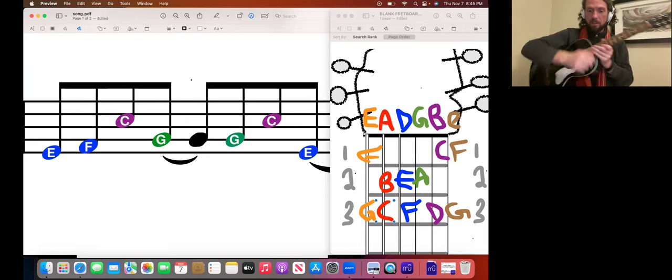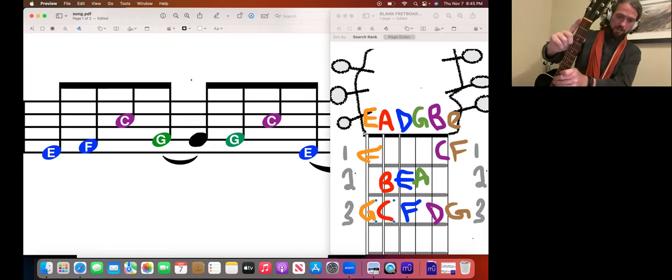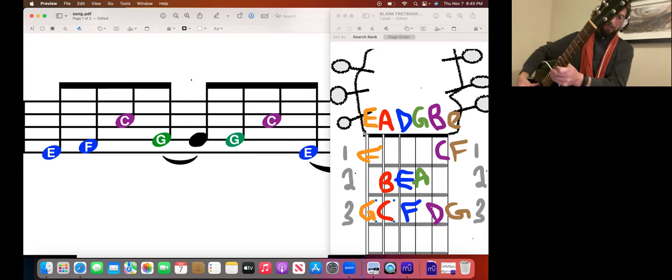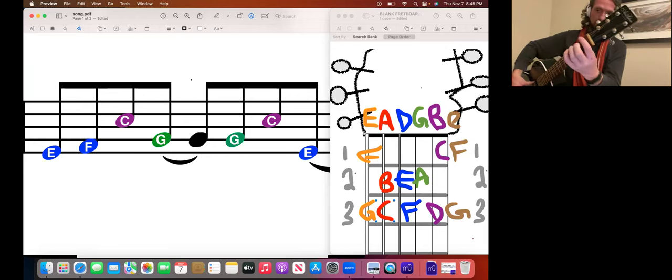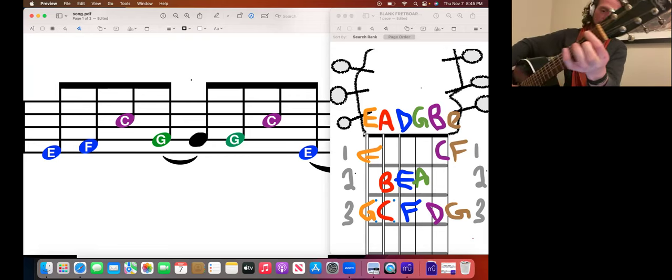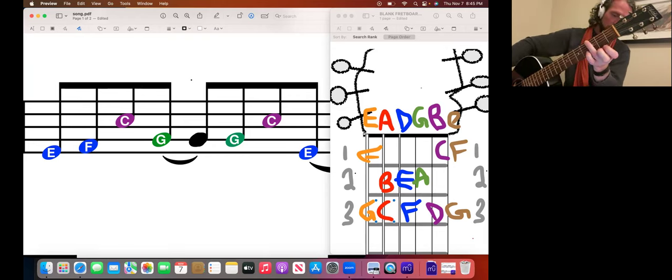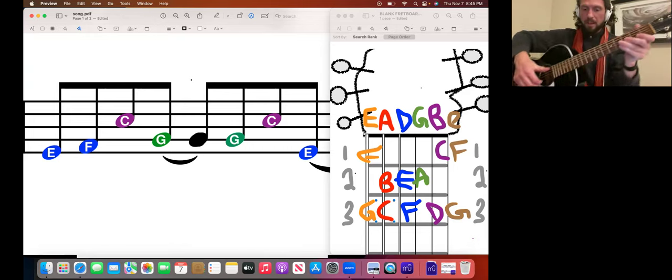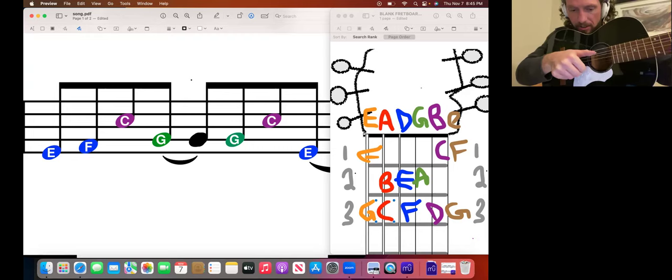The big string will make that orange as if the guitar was standing up straight. On the big string you've got E, F, and G. Then the next string will make that red. That's your A string.